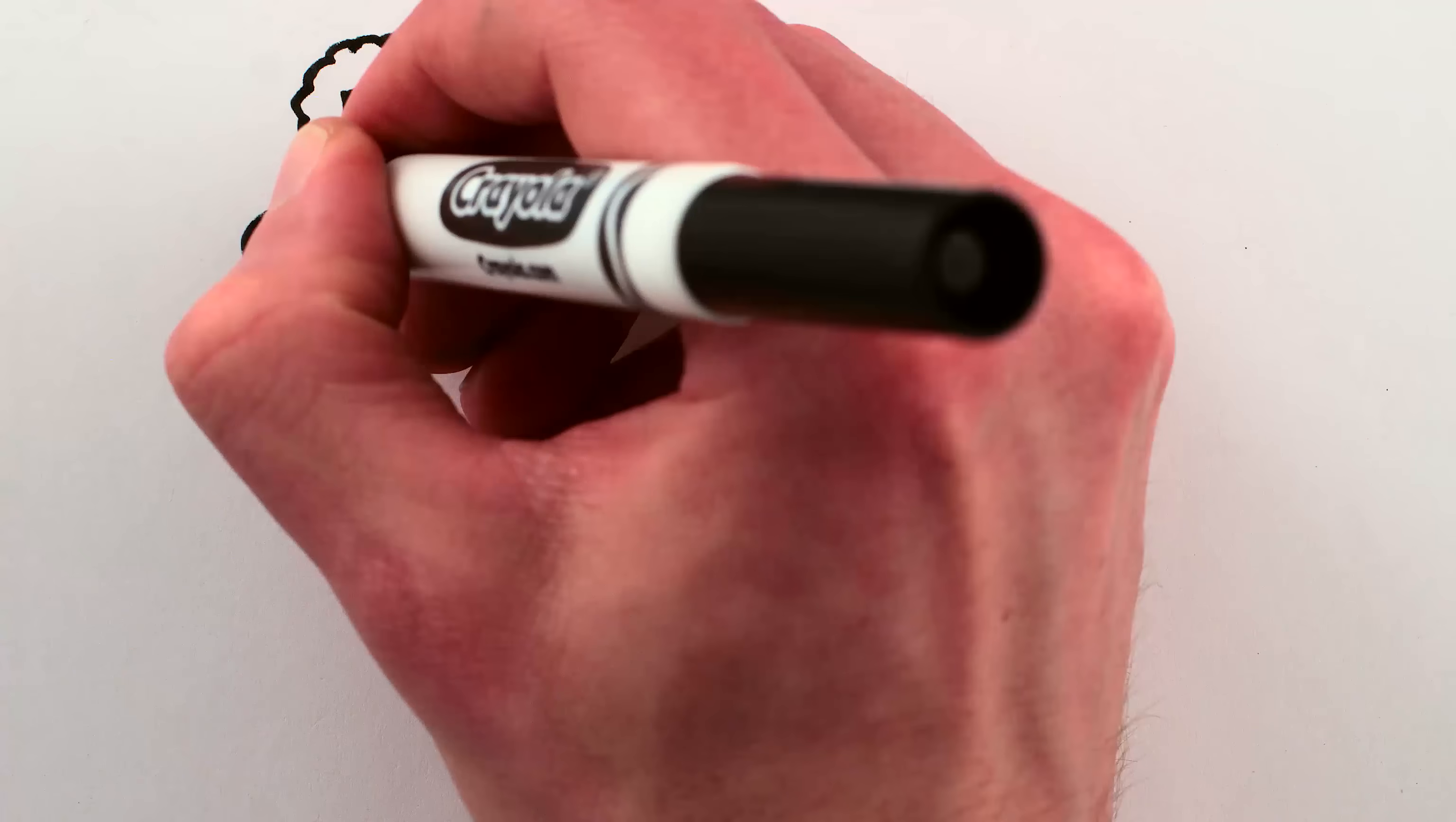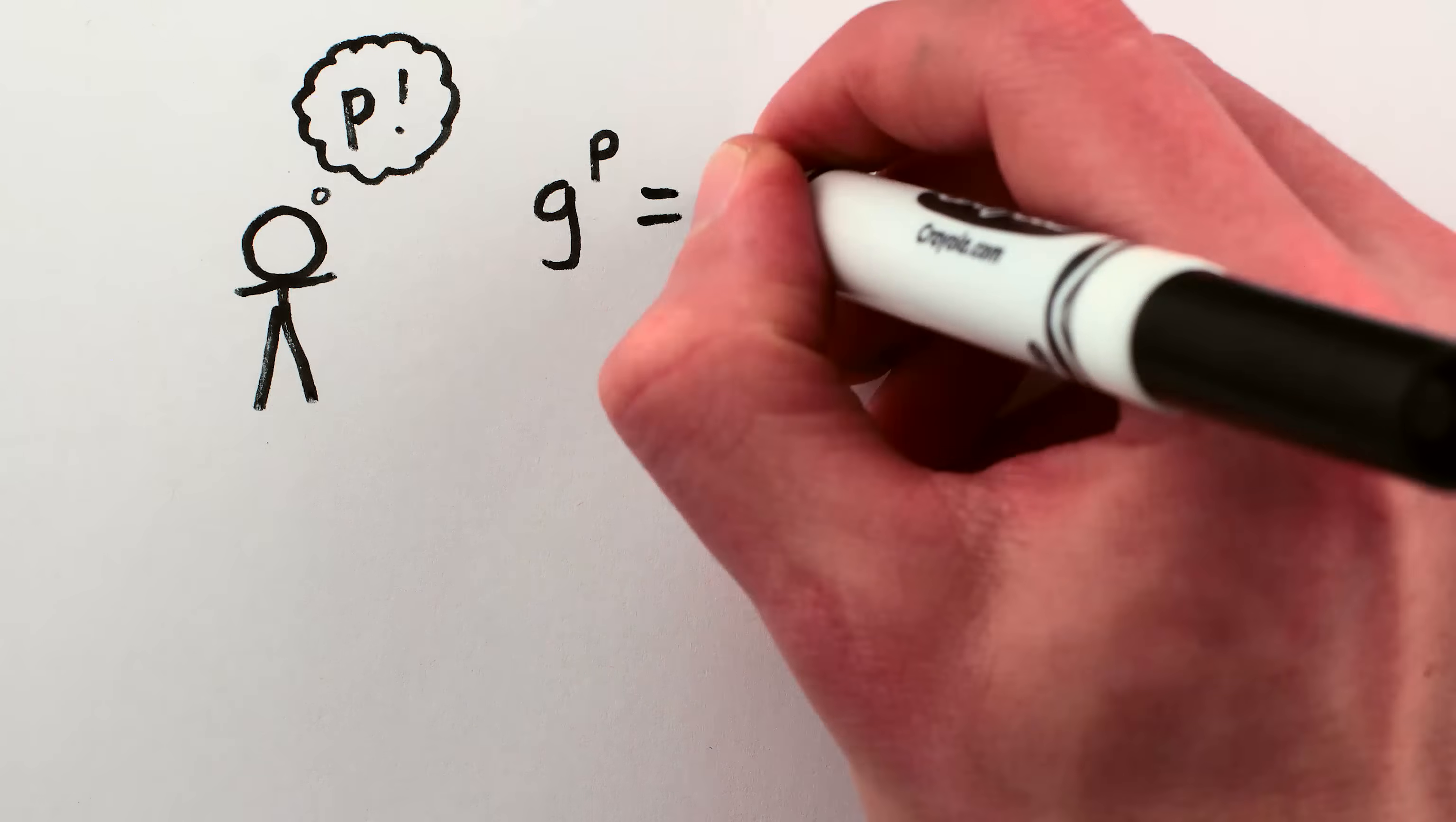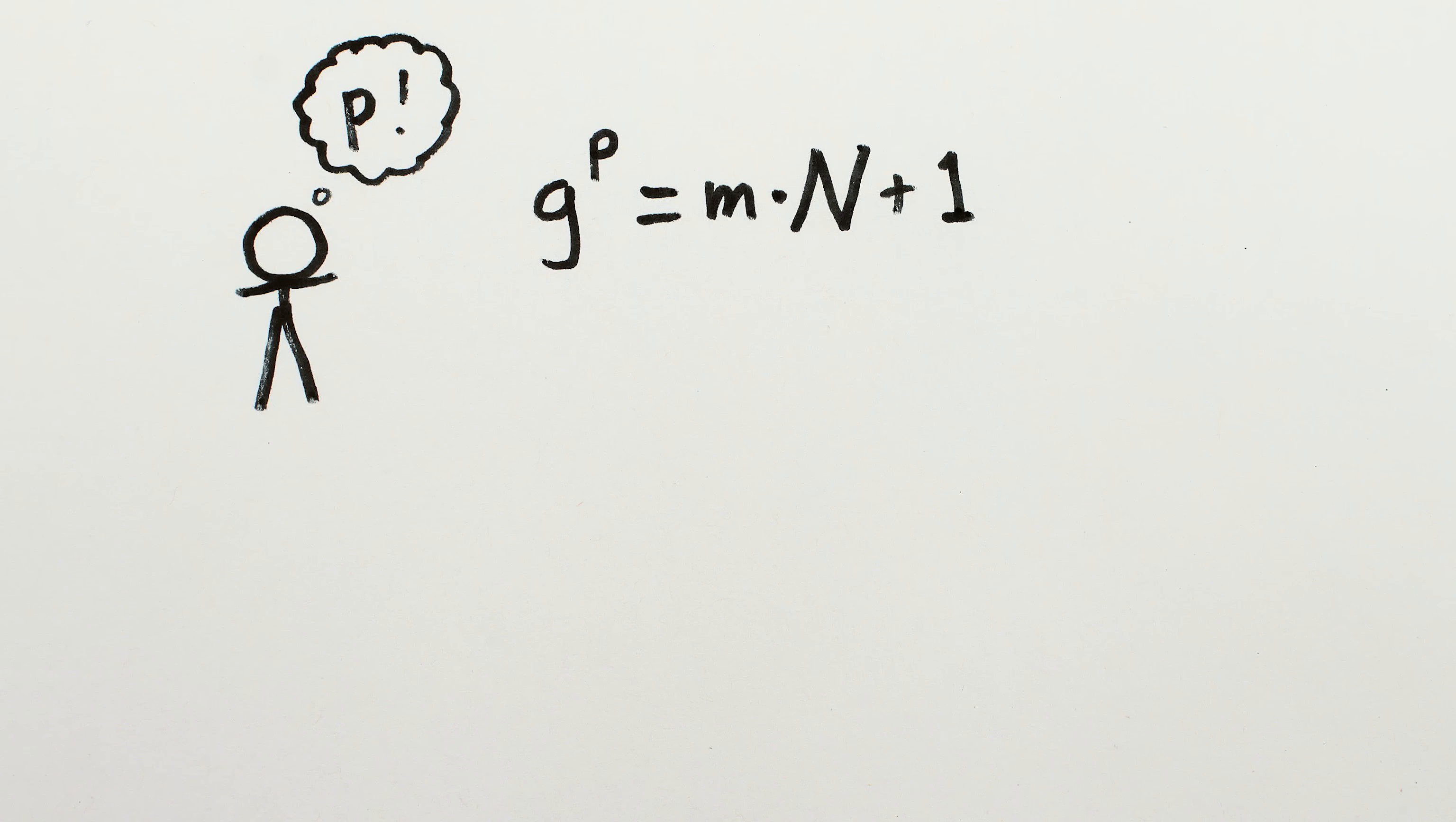Okay, so remember that if we knew what P was, we could raise our guess to that power and get one more than a multiple of n. On the other hand, if we take our guess to a random power, it's probably going to be some other number more than a multiple of n, say, three more. But check this out.